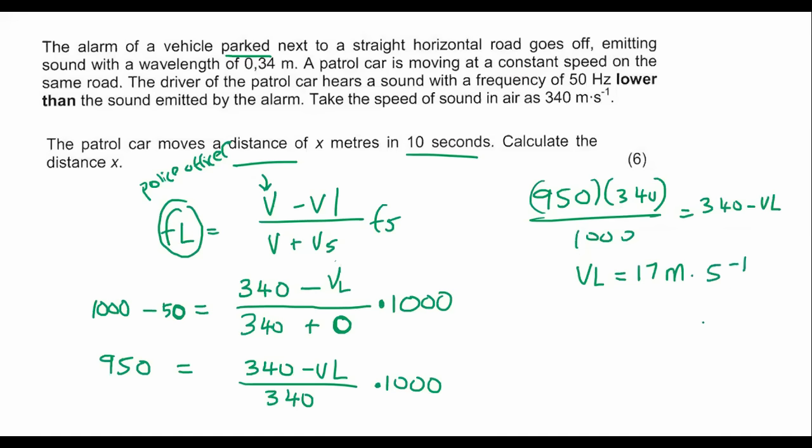Now we can use this distance and speed formula. We know that speed or velocity is equal to distance over time. If we know that the speed is 17 and the distance is X and the time is 10, well then it's easy. We can now calculate that the distance that the police officer will be able to move is 170 meters. And there is our final answer.